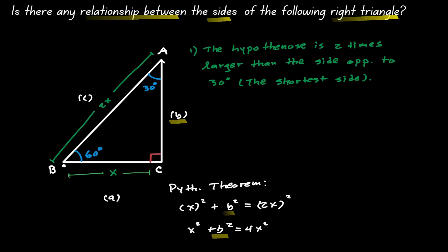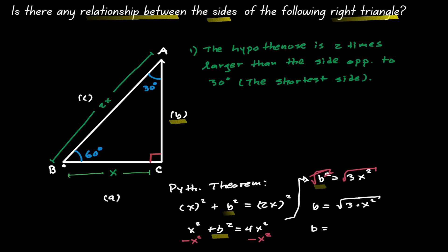So let's isolate B squared. To do that, let's subtract x squared on both sides. x squared minus one of those x squared — that gives 3x squared. And to solve for B, let's take the square root on both sides. So B is equal to the square root of 3 times x squared, which is the same as saying the square root of 3 times the square root of x squared. The square will cancel out with the square root, and now we have an expression for B. We can say that B is x times the square root of 3.